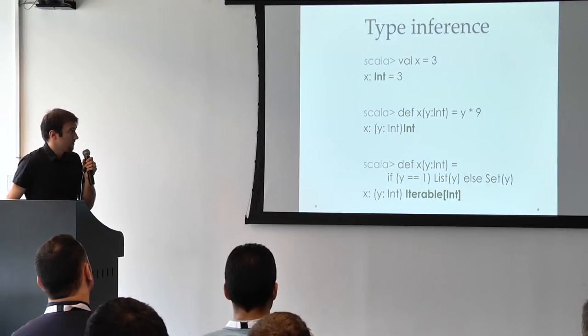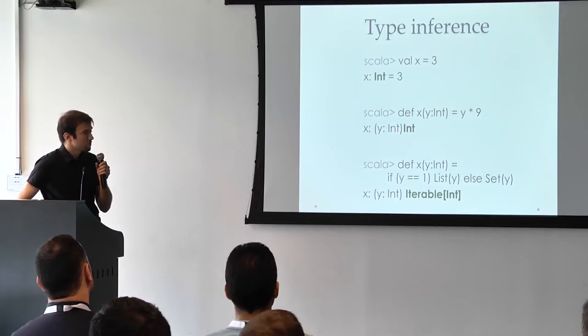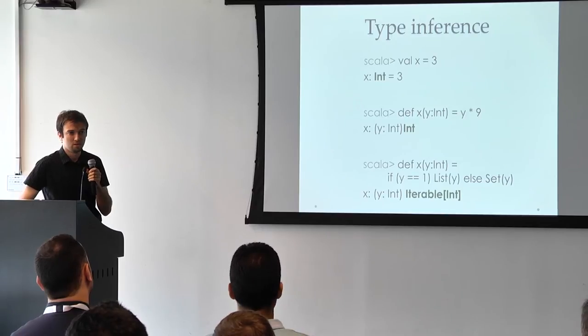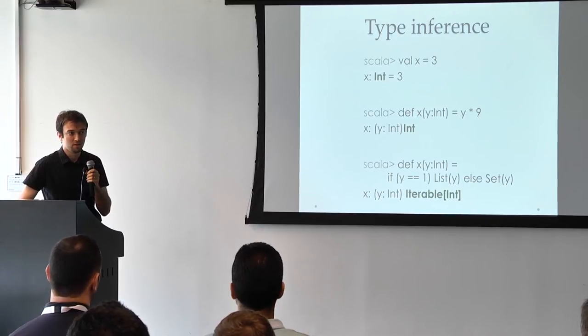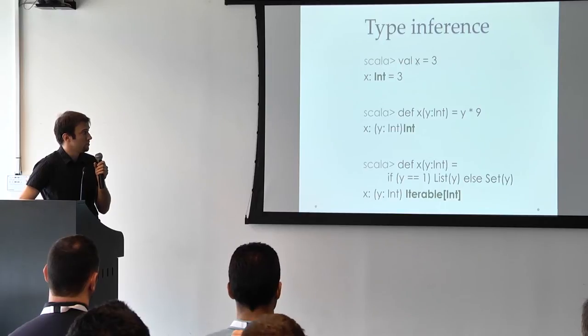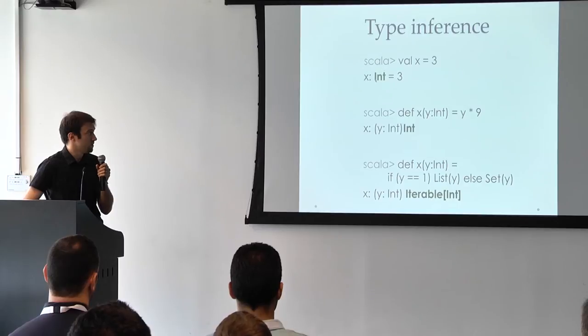We have a type inference in Scala. It is much stronger than the one in C-sharp, but actually in Haskell they have a stronger type inference. For example, in this case, a variable, we do not need to specify the type, and the type is inferred. This is basically what we get from the REPL of the Scala console.